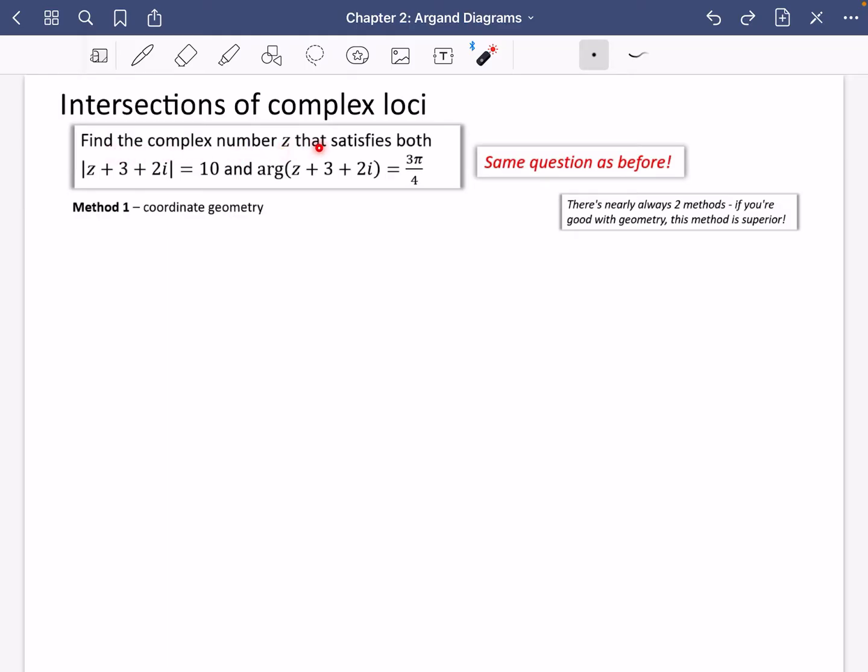So it says find the complex number z that satisfies both this thing that we've got here, which we know is going to be a circle, and this thing here, which we know is going to be a half line. I'll talk about what we're actually doing once we've got the sketch done.